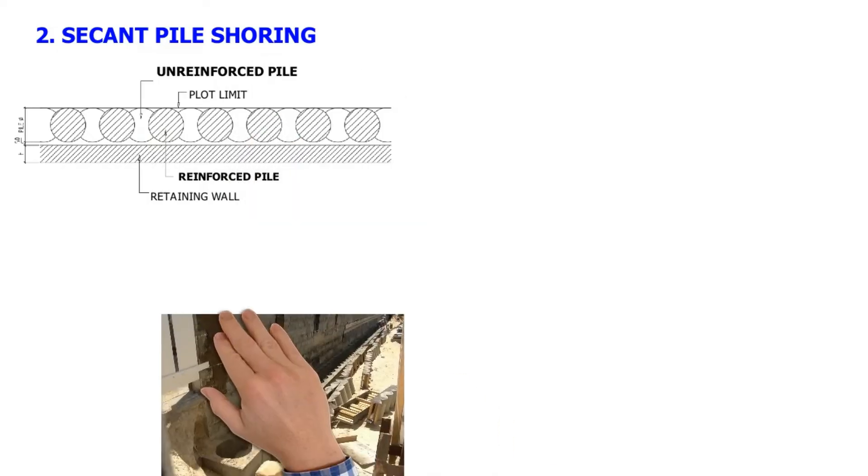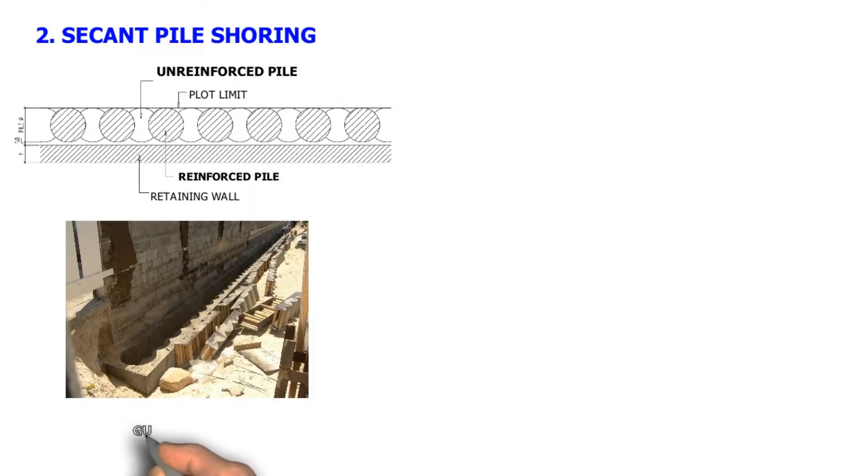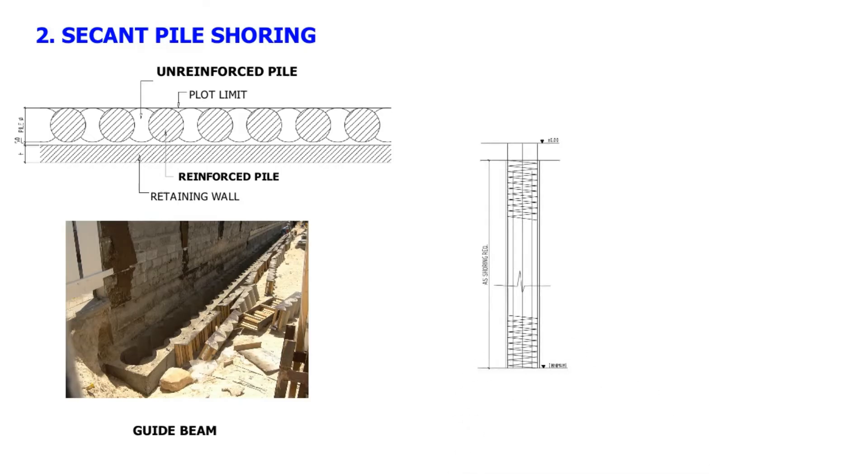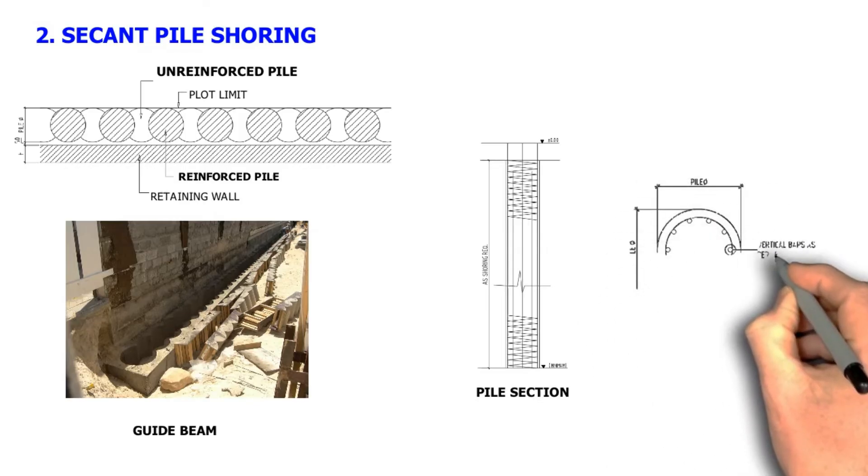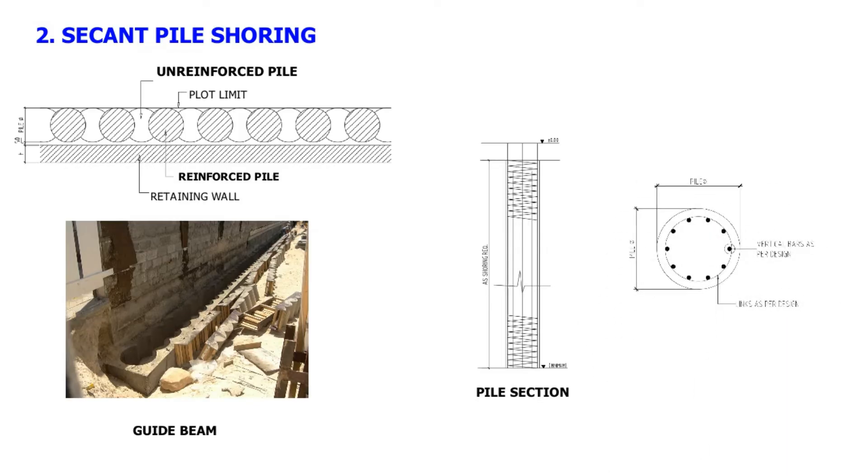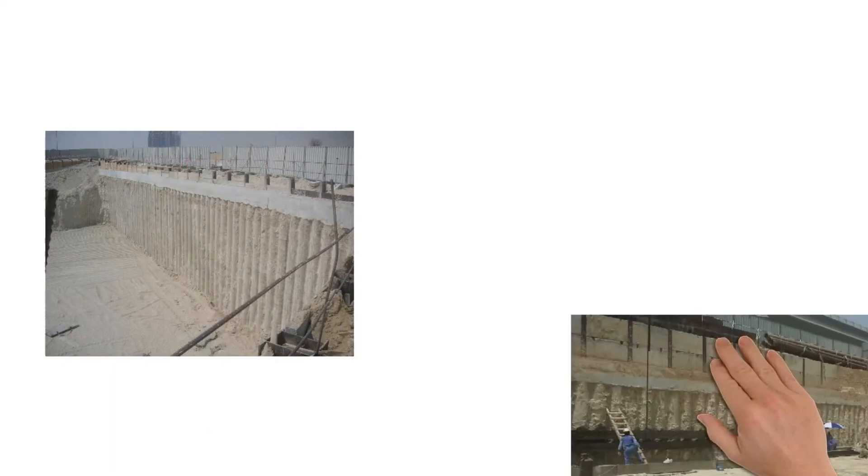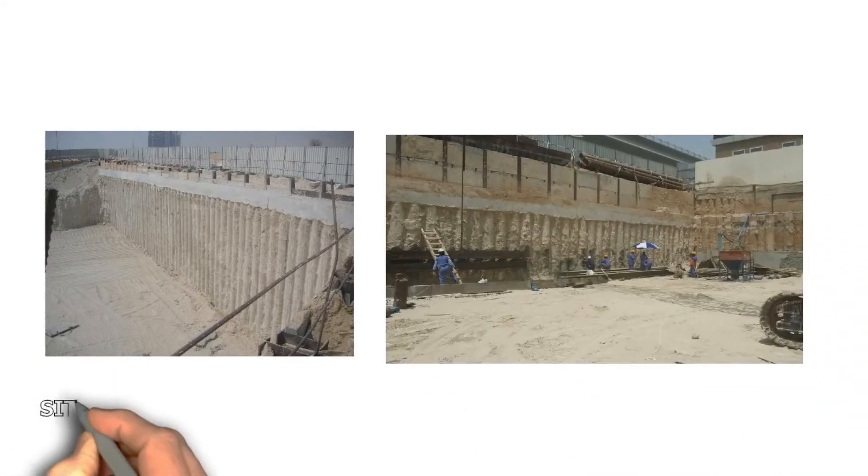A guide beam is constructed first prior to installation to keep the alignment in place. This is usually used in deep excavations. After casting the primary pile, the temporary casing is extracted while the concrete is not fully set, and a heavy casing is then driven into the intervening pile location, cutting into the fresh concrete of the adjacent pile. The secondary piles are then immediately drilled, the steel cages inserted, and the structural concrete is poured to form a continuous wall.